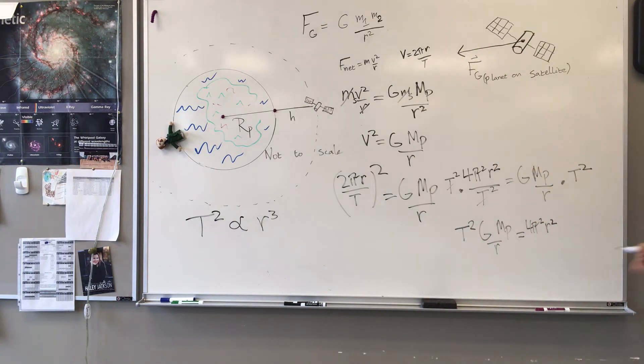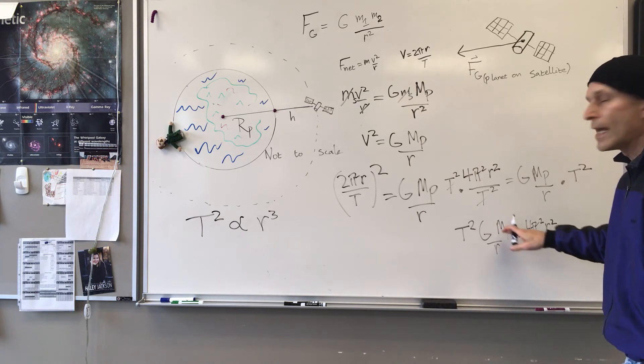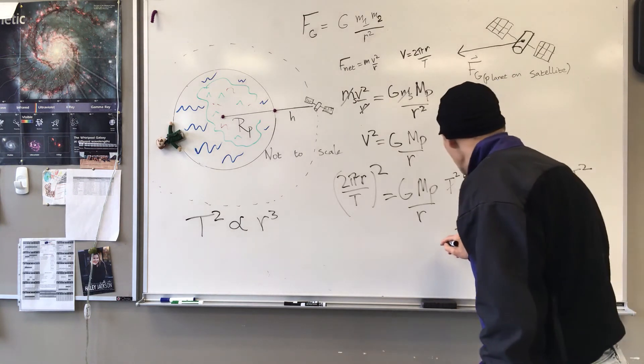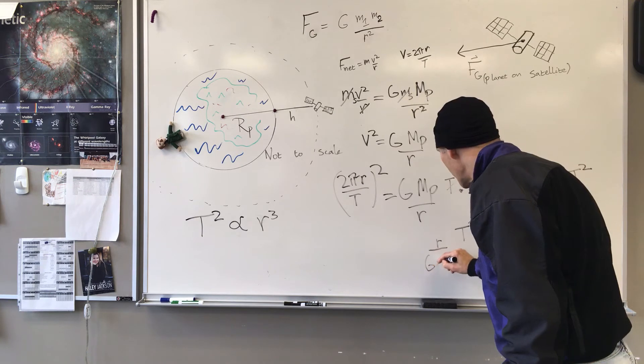Forgot that that was squared up there. So now what I can do is multiply both sides by R and divide both sides by G times the mass of the planet. So that would be R over G times the mass of the planet.